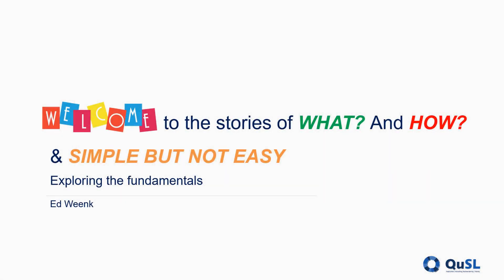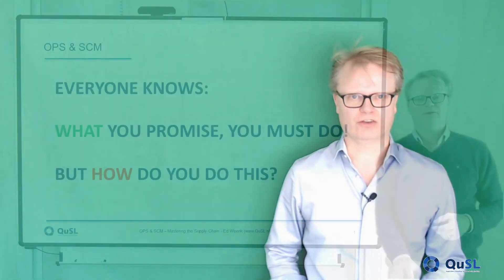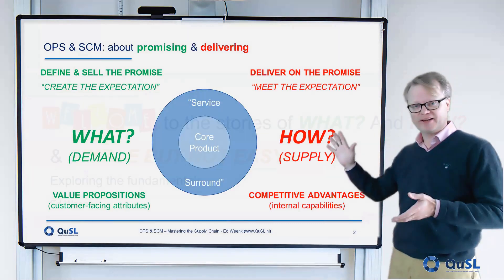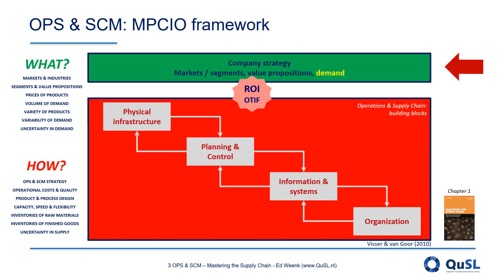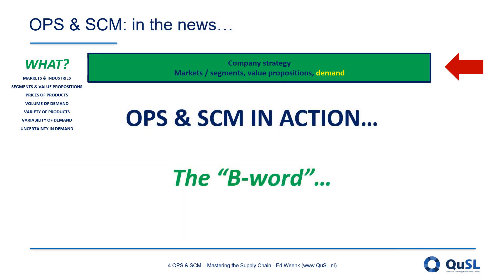Welcome to Mastering the Supply Chain. In this video we are going to look into a very specific phenomenon related to market demand, with an enormous impact on our operations and supply chains. I typically refer to it as the B word. The phenomenon is called the bullwhip effect.